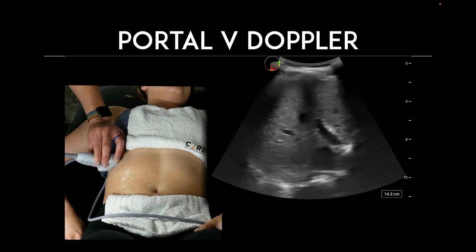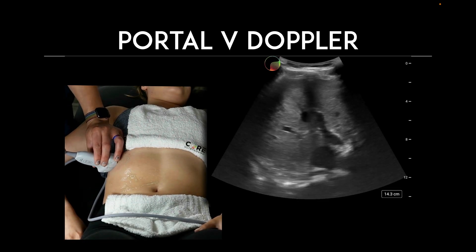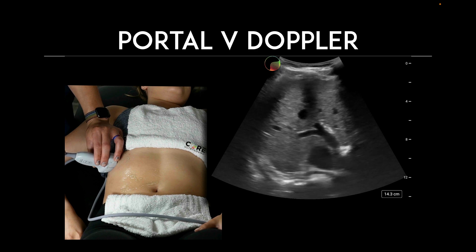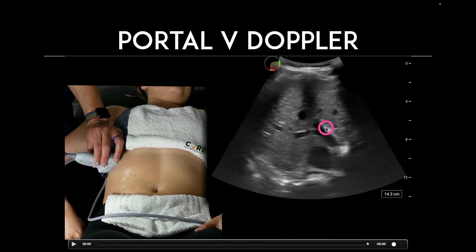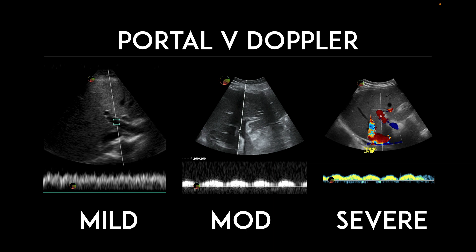With the portal vein, this is going to be slightly different in morphology relative to your hepatic vein. Notice the hyperechoic walls of the portal vein with the transducer in a more transverse cut, allowing us to see its long axis. We're going to do the same thing — throw some pulse wave Doppler on there and identify the waveform.